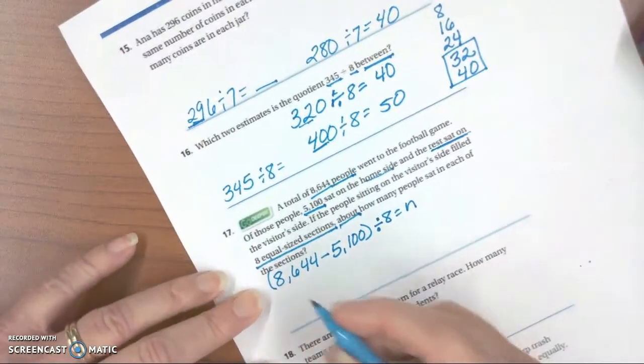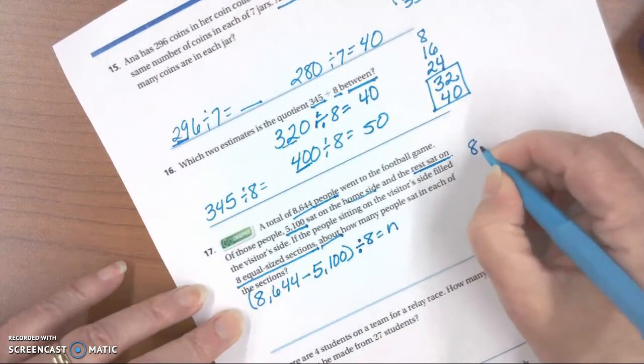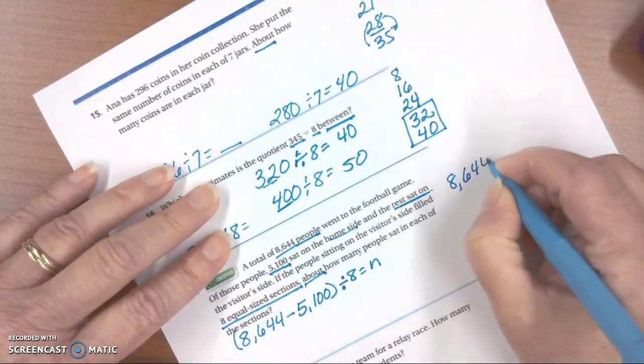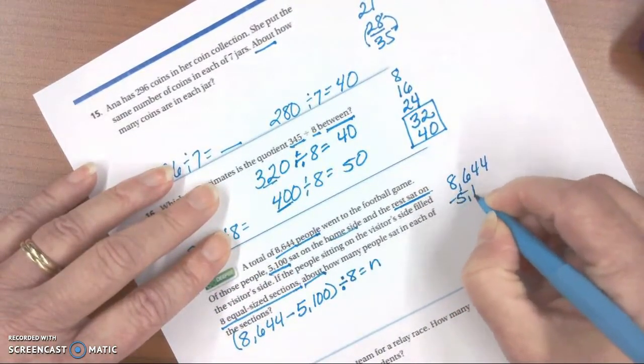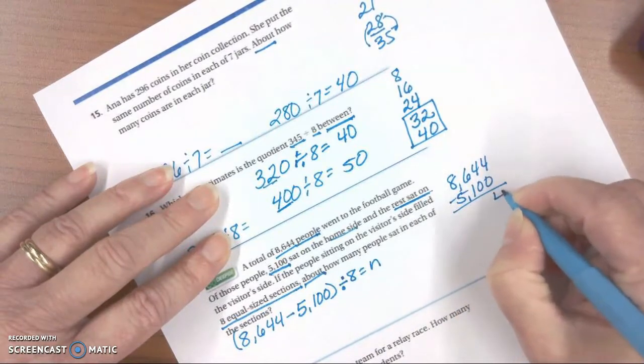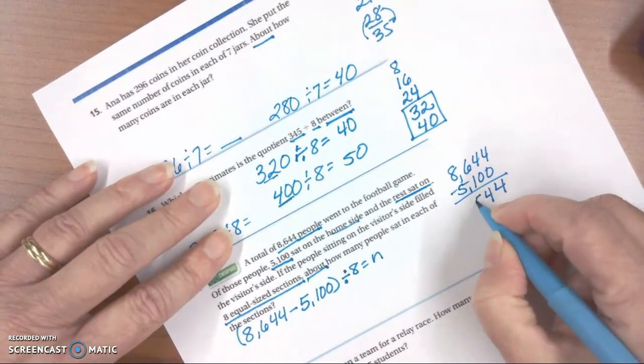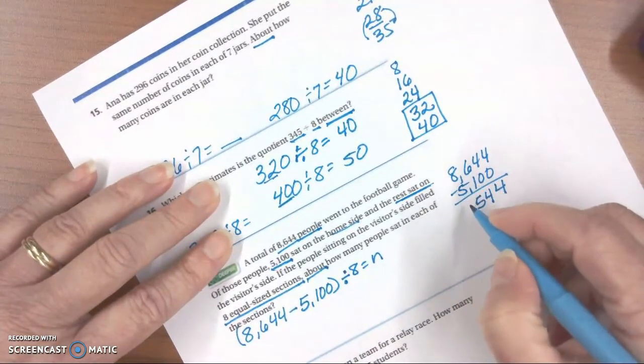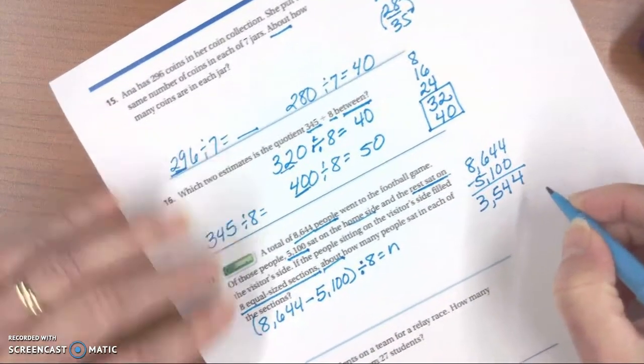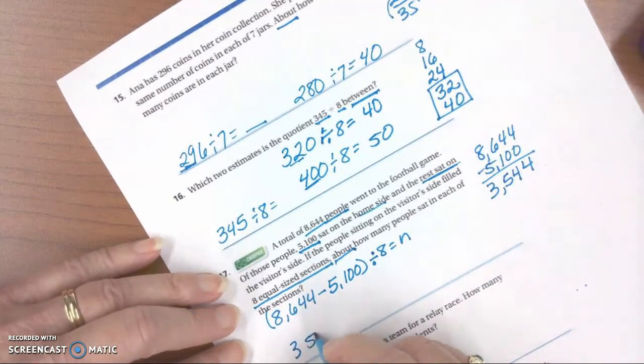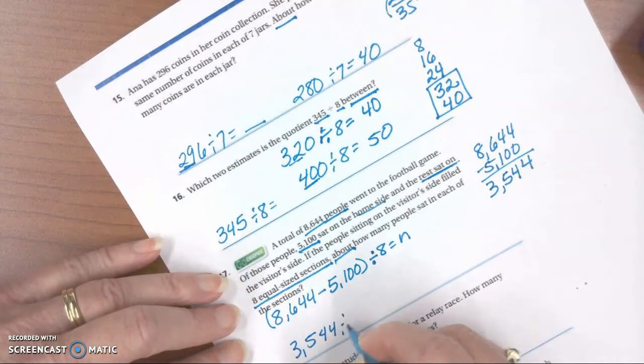So let's get started with that one. So 8,644 minus 5,100, pretty easy to compute. 4 minus 0 is 4, 4 minus 0 is 4, 6 minus 1 is 5, and 8 minus 5 is 3. So we have 3,544 divided by 8.